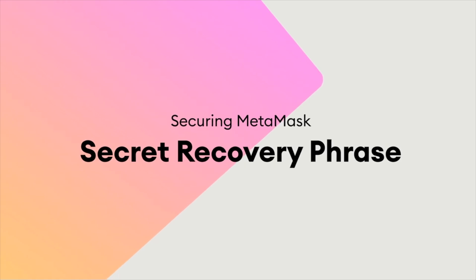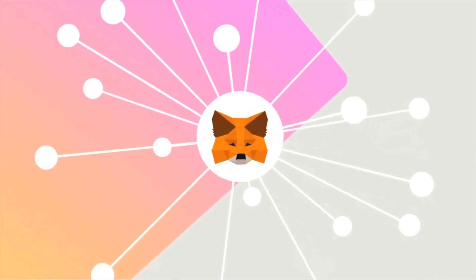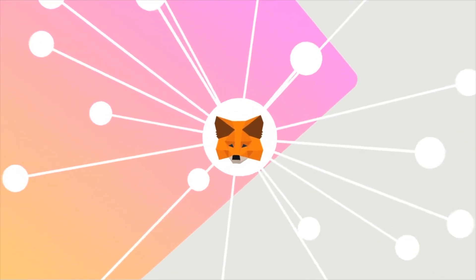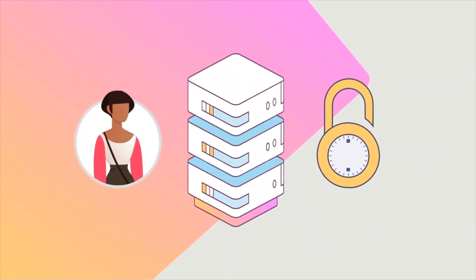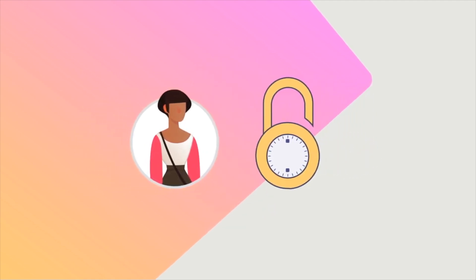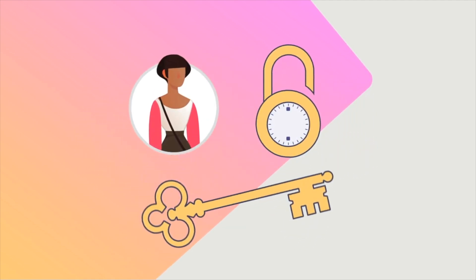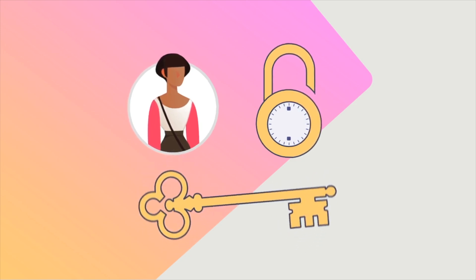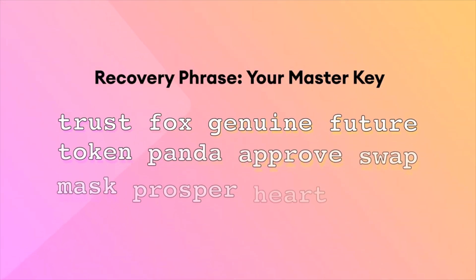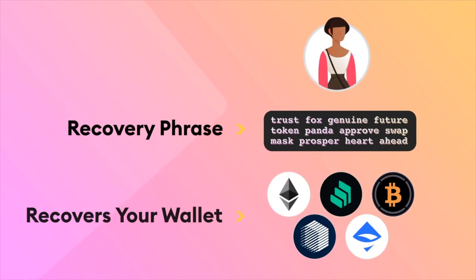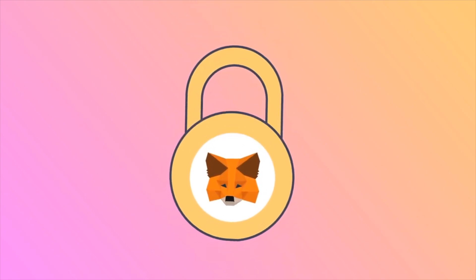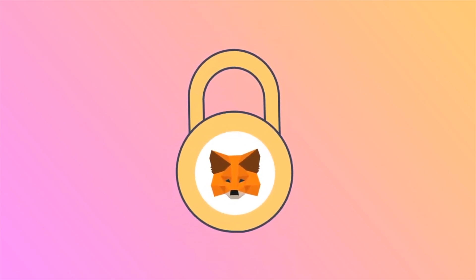MetaMask is a new way to connect to sites and applications. On traditional websites, a central database or bank is responsible for controlling and recovering your accounts. But on MetaMask, all of the power belongs to the holder of a master key — whoever holds the key controls the accounts. Your secret recovery phrase is your master key: a series of 12 words generated when you first set up MetaMask, which allow you to recover your wallet and funds if you ever lose access. It's important that you secure your wallet by keeping your secret recovery phrase very safe and very secret.